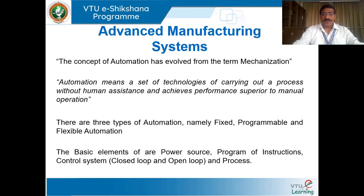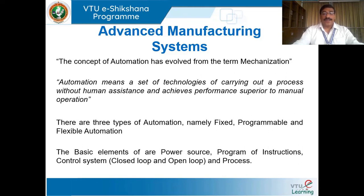Automation is composed of sophisticated machine tools like turning centers, CNC machines, plus robots, PLCs, ASRAs, and automated guided vehicle systems. In these work cells everything is automated, with least or no human intervention at all. Automation is a set of technologies to carry out processes without human assistance, achieving performance very superior to manual operation.